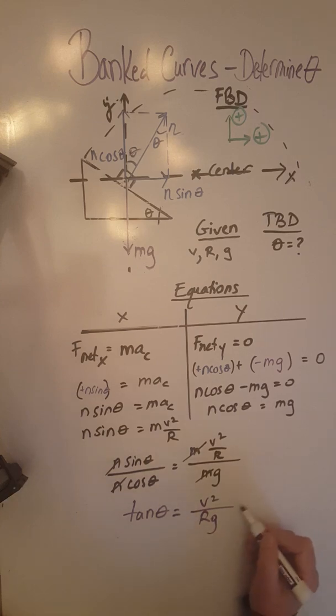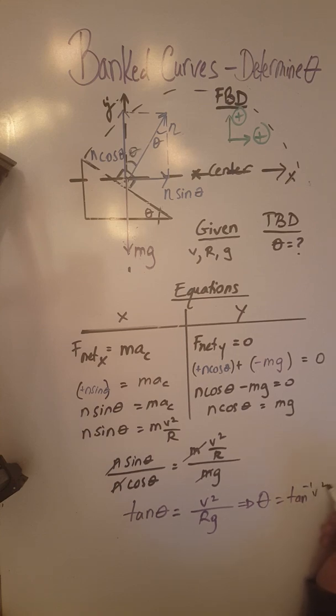And to solve for theta, we are going to have to take an inverse tangent and say that theta equals tangent inverse v squared over rg.